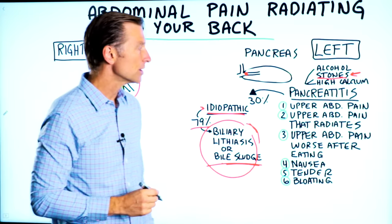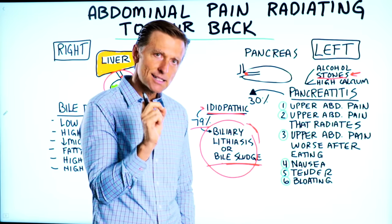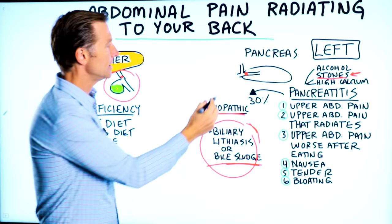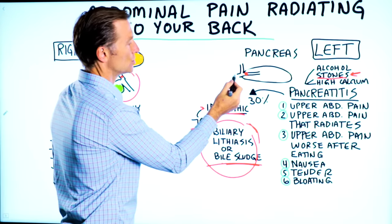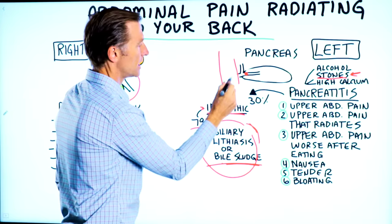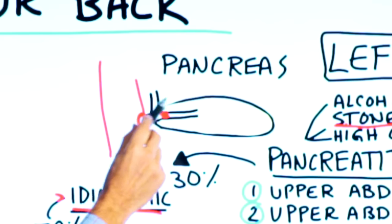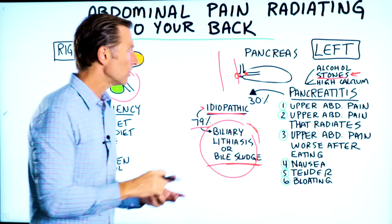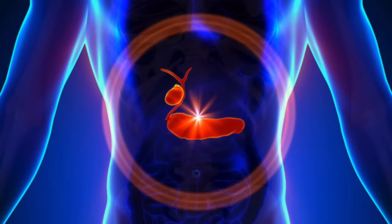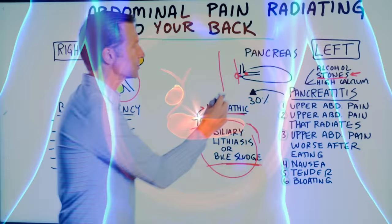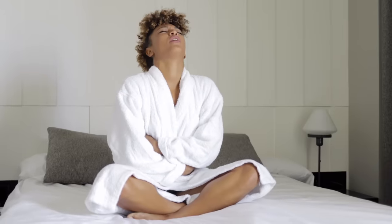Purified bile salts are also very good for a condition called sphincter of Oddi syndrome. That's when the bile duct and the pancreatic duct join inside the small intestine — there's a little duct right there, and if there's a blockage, it creates a lot of pressure. Really, it's the same thing: a stone or sludge obstructing this small tube and creating a lot of pain.